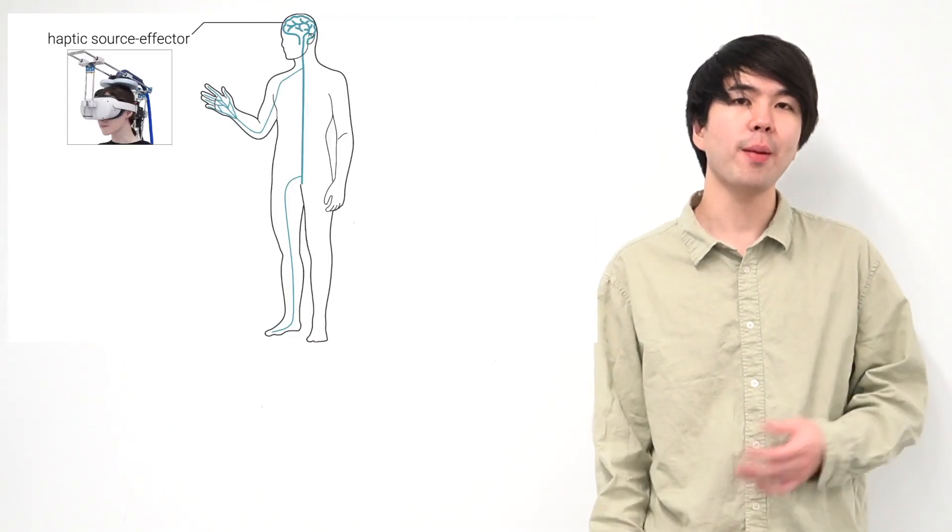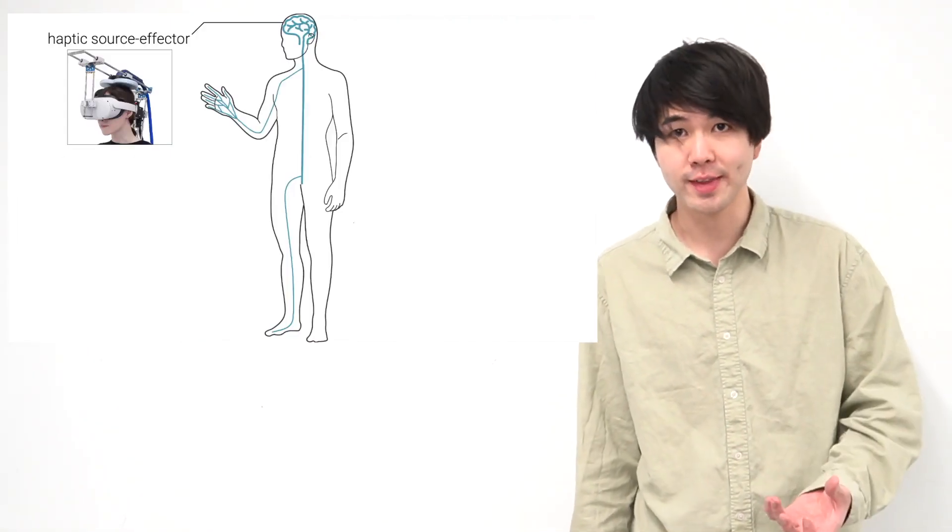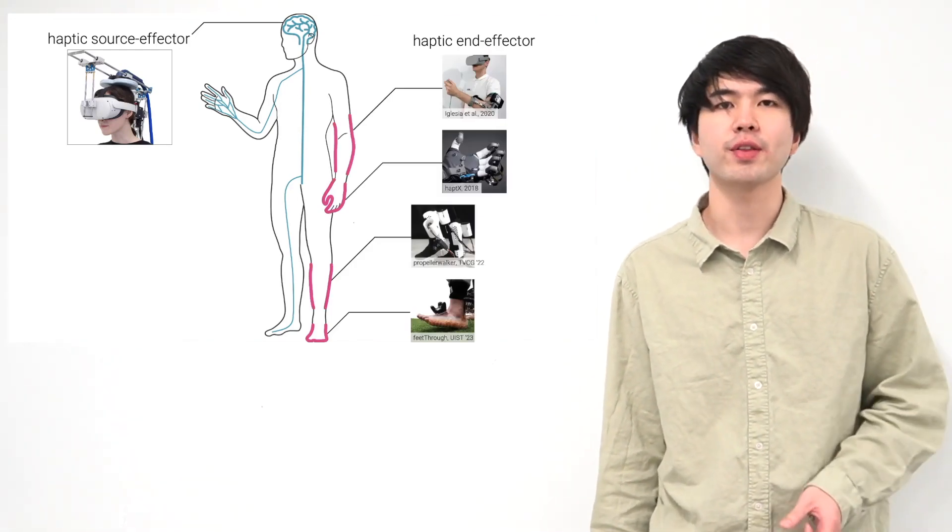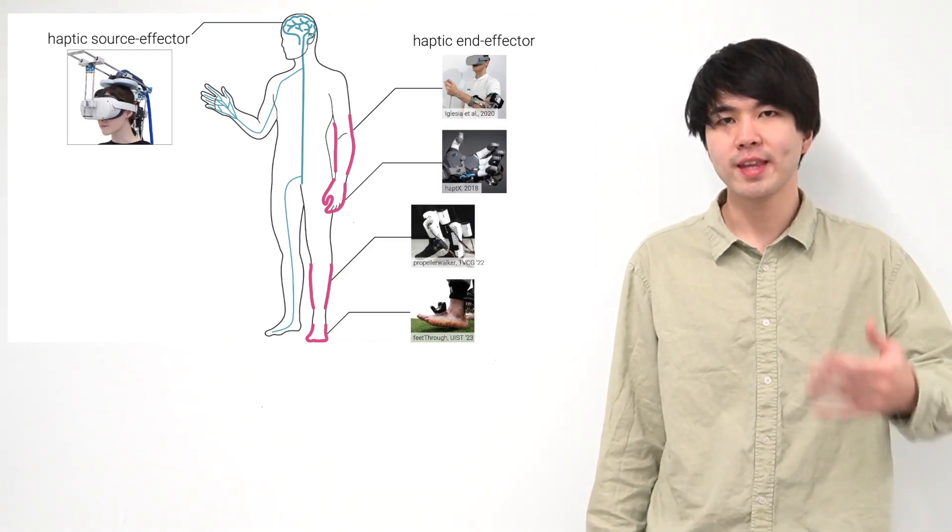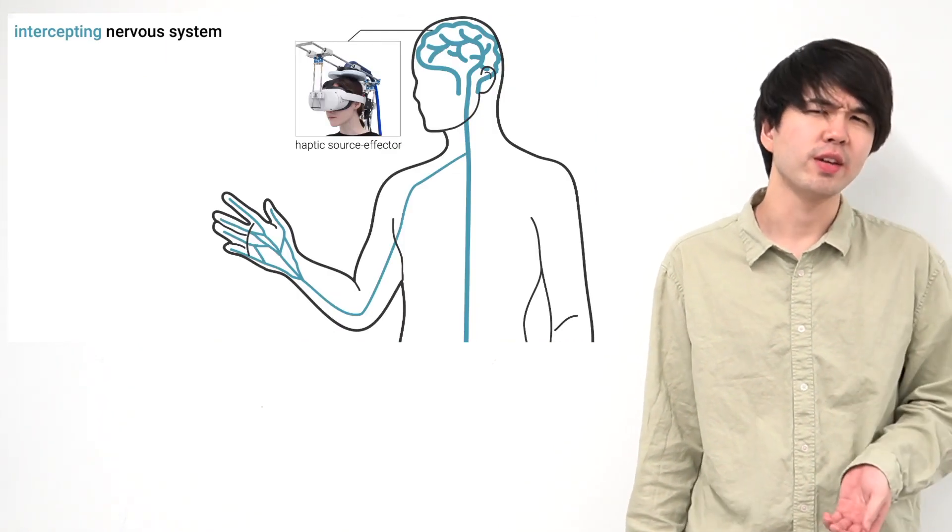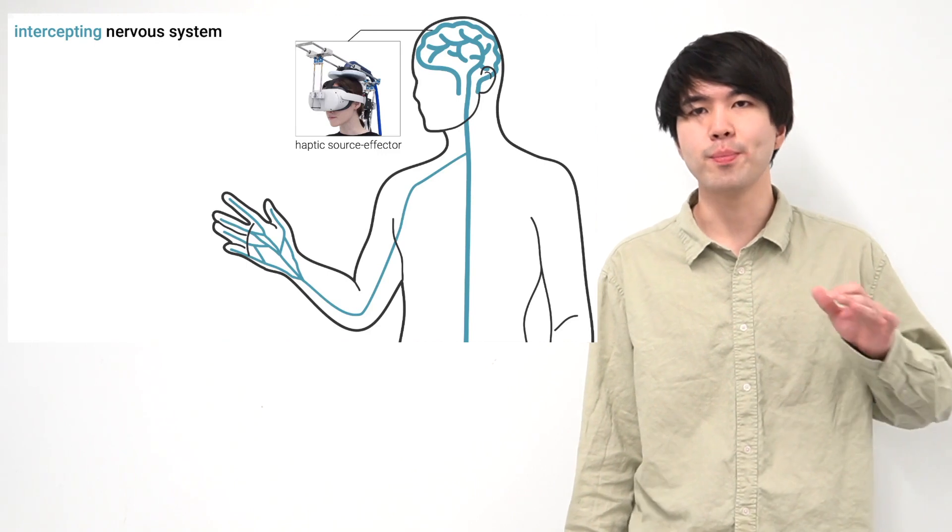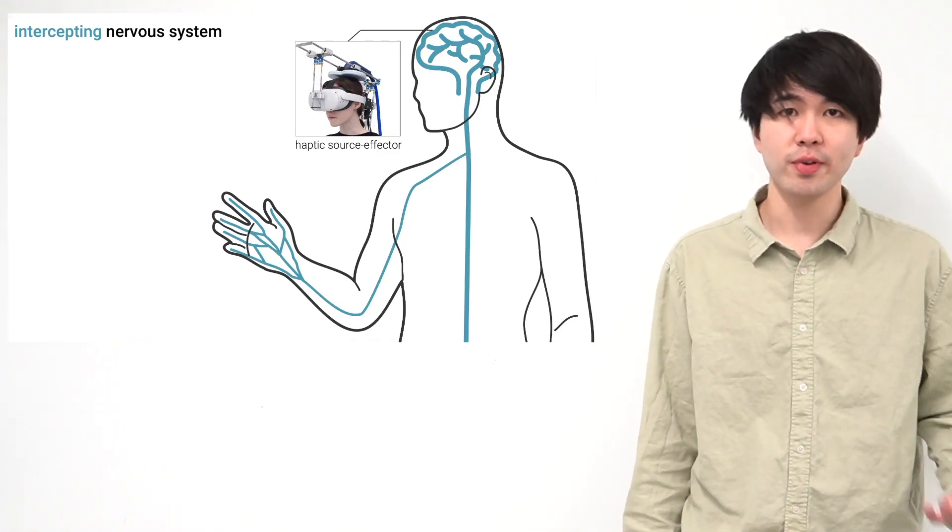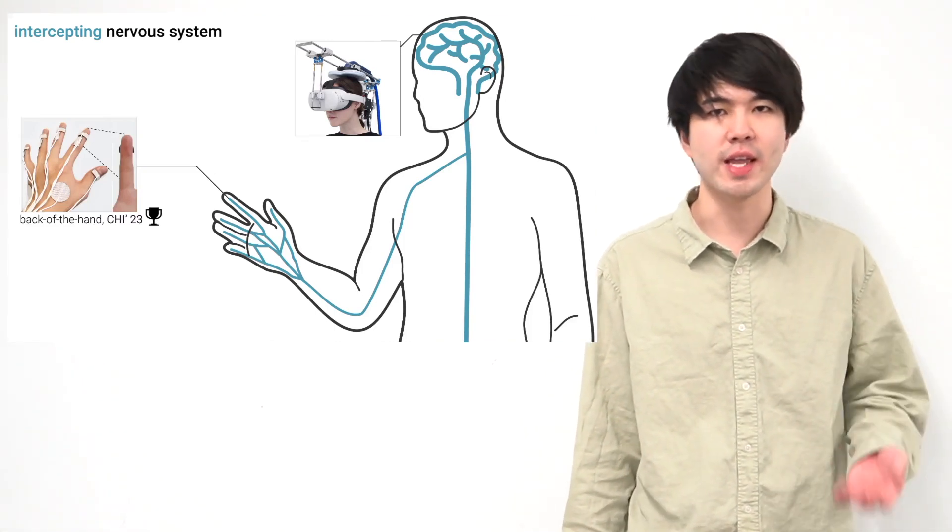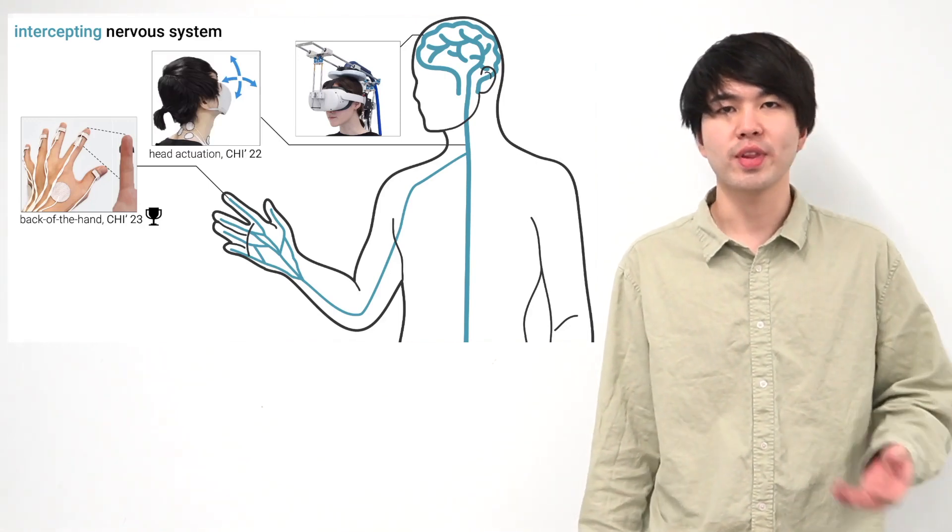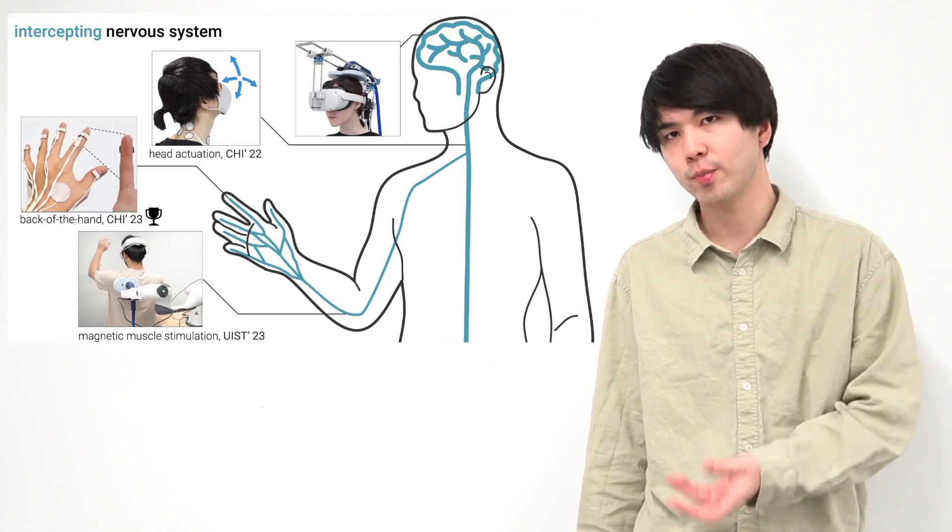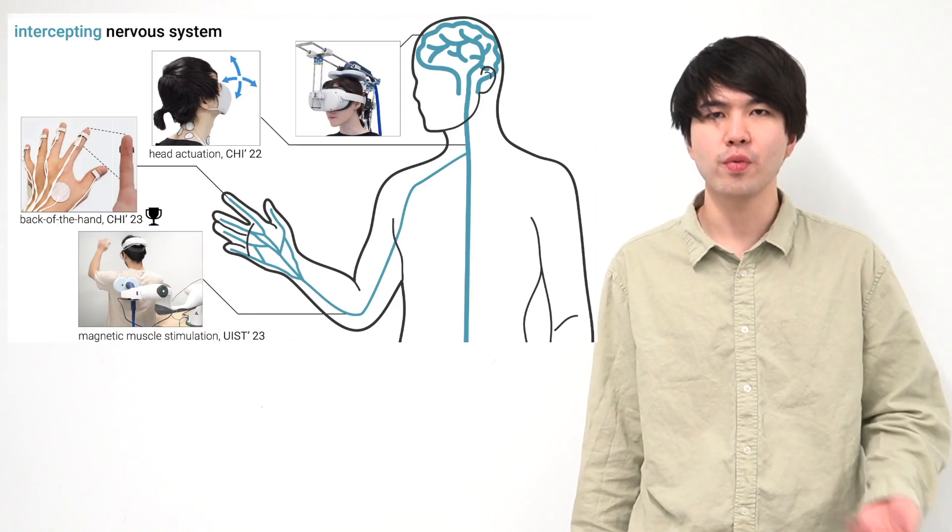All right. So today, I propose Haptic Source Effector, a new concept of creating haptic sensation by directly stimulating the brain. As opposed to conventional haptics end-effectors, our approach allows us to reach many points across the body from a single device only sitting on the user's head without instrumenting users with many devices in different locations. Haptic Source Effector is also the latest and most extreme version of my vision for intercepting the nervous system. For instance, previously I created touch sensations in the user's fingers and the palm by only having the device on the back of the hand, which I presented last year in CHI 23. Or my CHI paper from 22 presented our approach to move the user's head without any robotic instrumentation on their head. Or with my magnetic muscle stimulation, which I presented in last year's UIST, you can stimulate the muscle without wearing anything on the muscle.